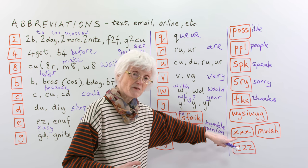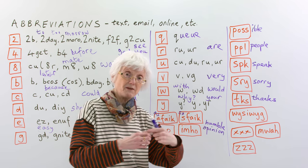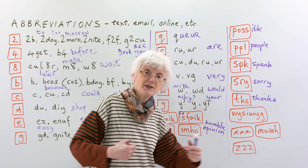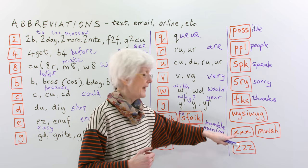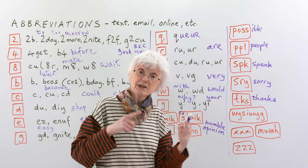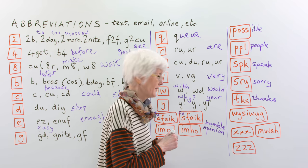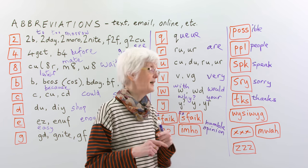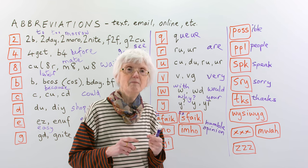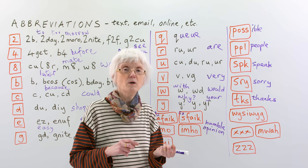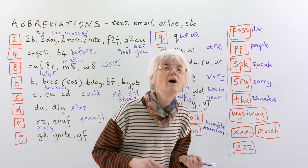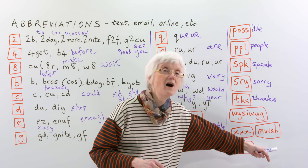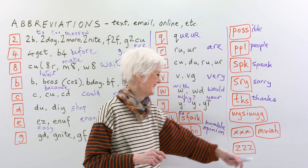And then lots of Xs. You can have all sorts of numbers of Xs depending on how enthusiastic the person is feeling. XXX means kisses. Kisses. And also this one. Because especially actors do this. They go muah, muah, like that. So, that's the sound of someone kissing. Muah, like that. Muah.